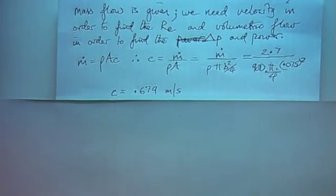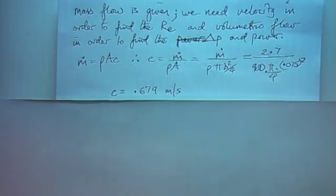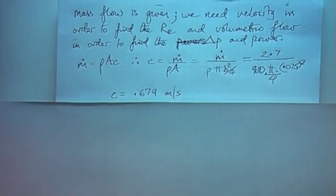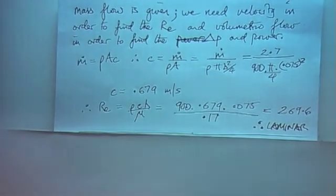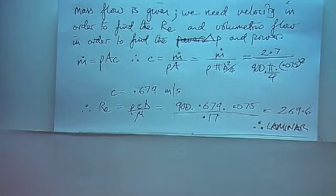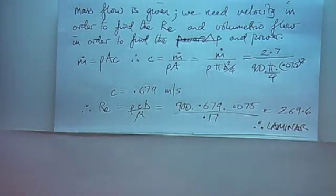So, first part of the problem: in order to calculate the Reynolds number, we need the fluid velocity. I'm going to go through this quickly and just point out the salient numbers. If you make a quick note of the velocity, you can always come back and reconstruct that for yourselves. When we have the velocity, we can just plug that into the Reynolds number equation. You need to recognise which of the different flavours of viscosity you're given.